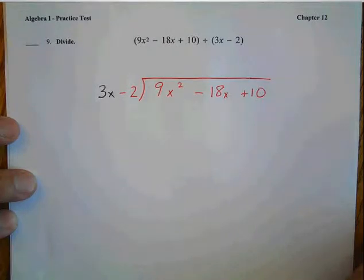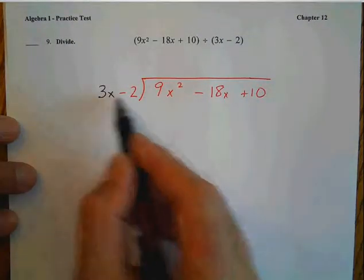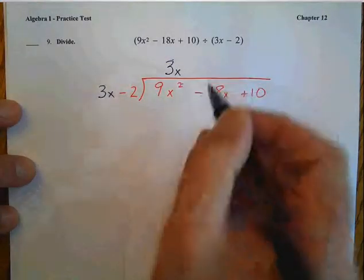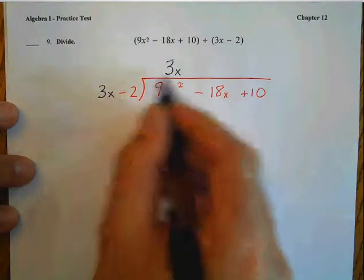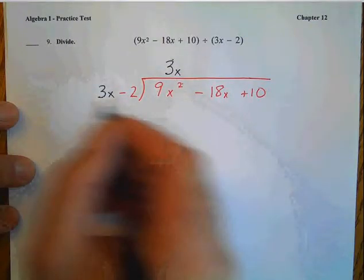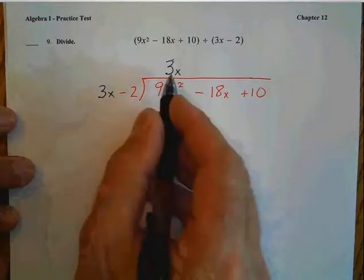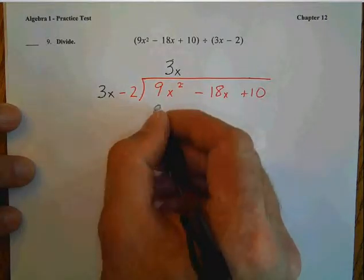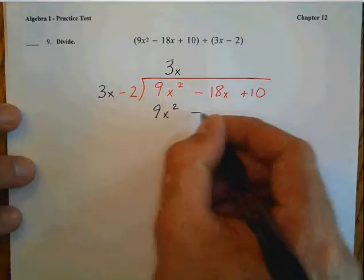Our first question is, how many times does 3x go into 9x squared? Well, it goes in 3x because 9x squared divided by 3x is 3x. Now, our step one is done and we multiply 3x times the 3x minus 2.